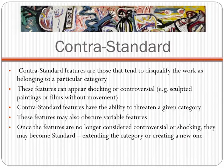Contra-standard features are those qualities that tend to disqualify a work of art from a particular category. These features can appear shocking or controversial, something out of the ordinary for that category. One example would be films without movement, or a Robert Rauschenberg collage combine that mixes both sculpture and painting. Two different contra-standard features also have the ability to threaten a particular category. Once a feature is no longer considered controversial or a misfit, it can become a standard feature, and the feature or features can then extend the category or create a brand new one.